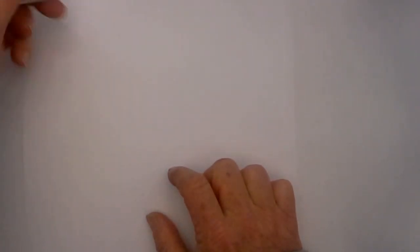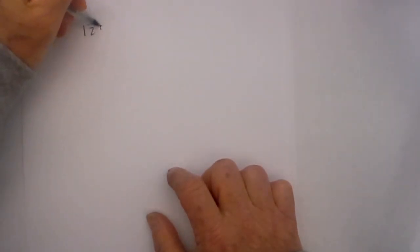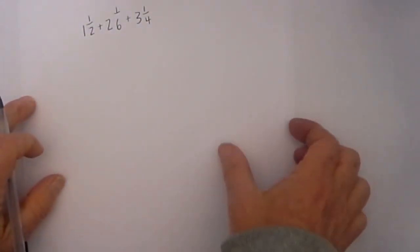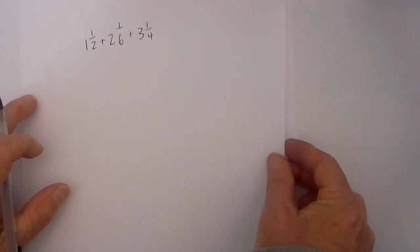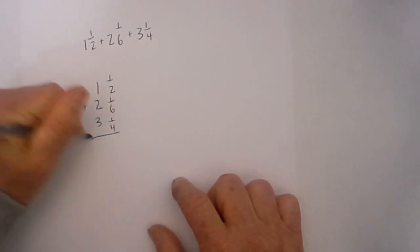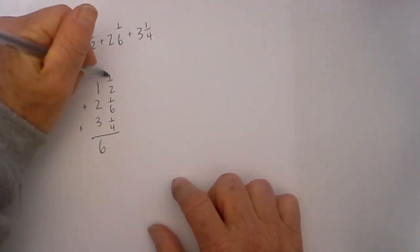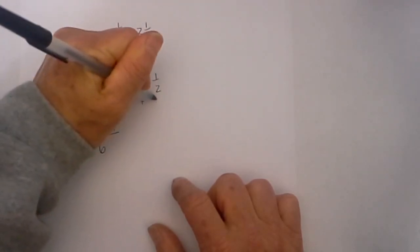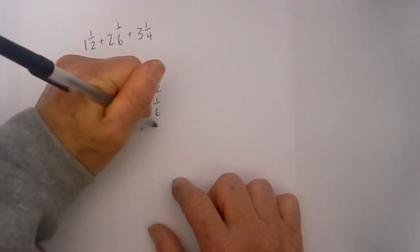Now on this last one I would like to mix it up just a little bit. What if you have several mixed fractions? Say you have one and a half plus two and one sixth plus three and one fourth. What you can do is still line them up in a column like I did before. We add the whole numbers: one plus two is three plus three is six. Then I complete the same thing with the fractions.